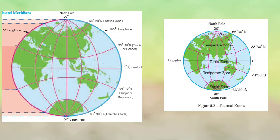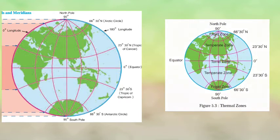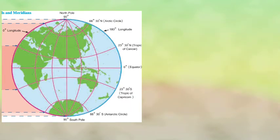Due to the variation in intensity of sunlight, diversity is observed in animal and plant life across these regions. The various kinds of diversity in plants and animal life are a result of differences in sunlight intensity.